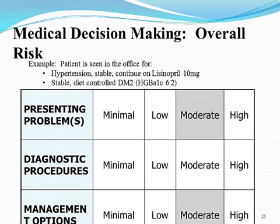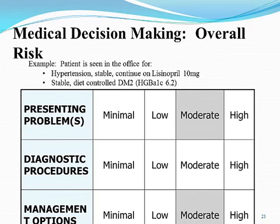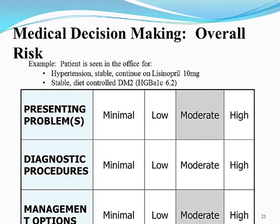Let's go over a table of risk example. The highest risk determines the risk associated with the patient. For a patient whose assessment and plan states hypertension stable, continue lisinopril 10 milligrams, and stable diet-controlled diabetes mellitus Type 2 with hemoglobin A1c 6.2: looking at the presenting problem, we have moderate because we have two or more stable problems. For diagnostic procedures, there's nothing from this encounter moving forward. Management options is moderate because we have prescription drug management.